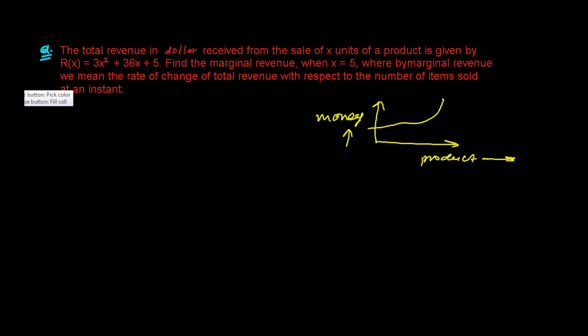Then let's say this is a graph at any point. If you go, let's say at this point, and at this point, the slope of this tangent at this point will give you the derivative. Let's say delta money over the delta product.